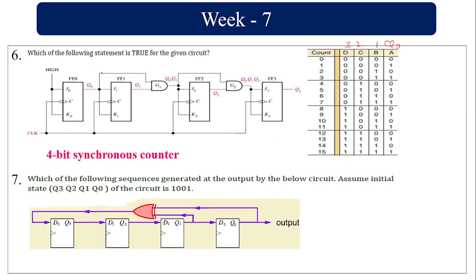Which sequence is generated at the output by the below circuit? They have given Q3, Q0, Q1 with initial state 1 0 0 1. Computing exclusive OR: 0 XOR 1 = 1, 1 XOR 0 = 1, 0 XOR 0 = 0, 1 XOR 1 = 0, then 1 XOR 0 = 1, 0 XOR 1 = 1. The output sequence is 1 0 0 1 → 1 1 0 → and so on.